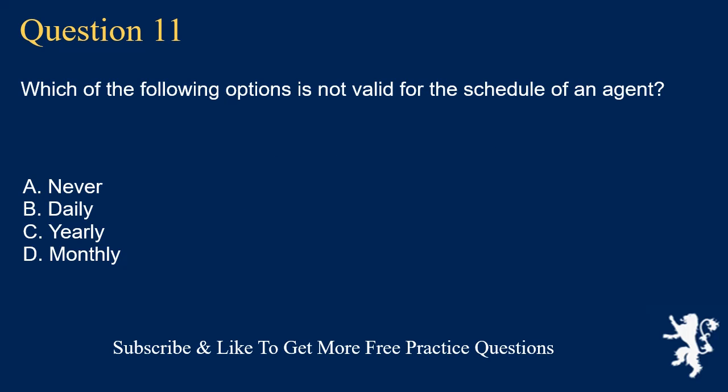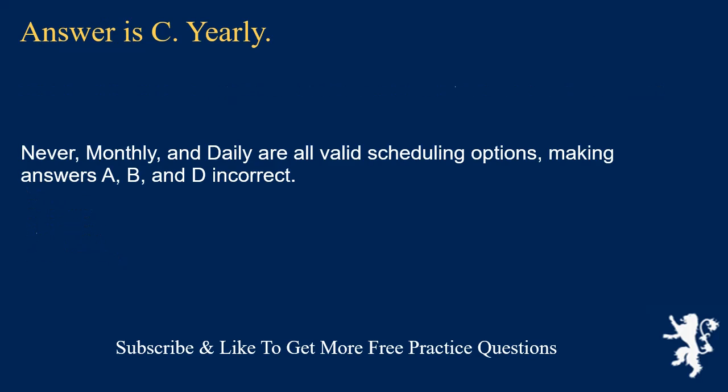Question 11. Which of the following options is not valid for the schedule of an agent? Never. Daily. Yearly. Monthly. Answer is C: Yearly. Never, monthly, and daily are all valid scheduling options, making answers A, B, and D incorrect.